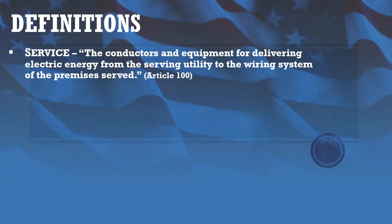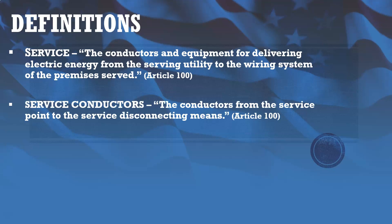Our definitions for this lecture: a service is the conductors and equipment for delivering electric energy from the serving utility to the wiring system of the premises served — essentially whatever is in between the utility connection and the system of the property. And service conductors are the conductors from the service point to the service disconnecting means.